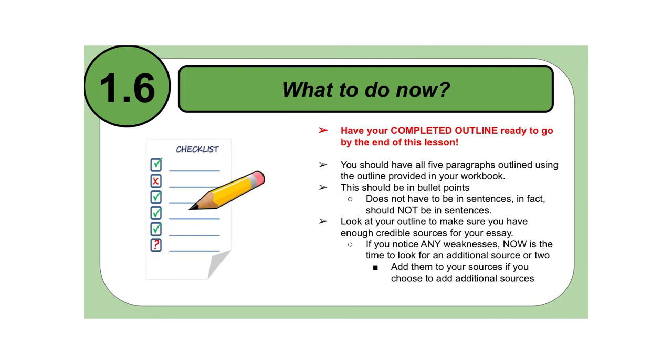So what should you be doing now? First, the biggest reminder that you have is here in red. Have your completed outline ready to go by the end of this lesson. You should have all five paragraphs outlined using the outline provided in your workbook. This should be in bullet points. Do not use sentences in any capacity. Just do bullet points. Don't stress yourself out at this point. The outline should be easy.